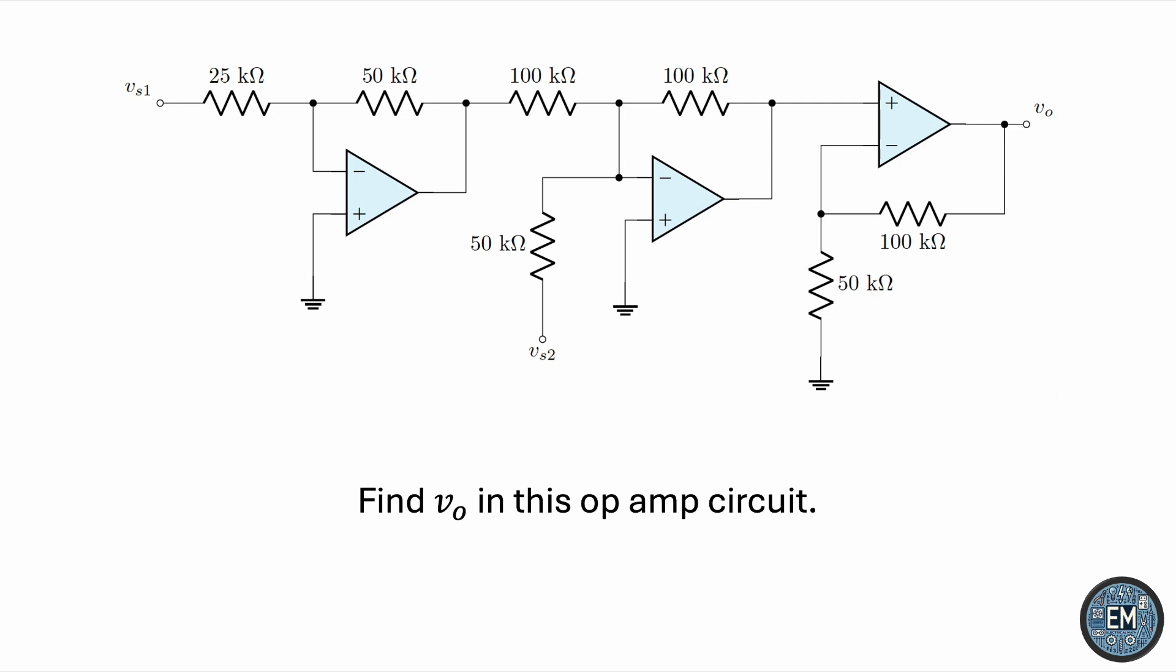Find VO in this op-amp circuit. Let's get started by naming the nodes. We have three op-amps, and we'll call them 1, 2, and 3 going left to right.